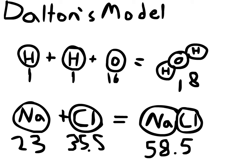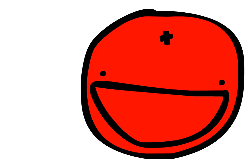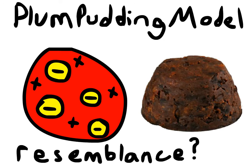Dalton created the billiard ball model to help demonstrate how compounds work. J.J. Thompson's Theory, 1904. Thompson discovered a subatomic particle called an electron. Originally he called the negatively charged particles corpuscles, later to be named the electron. He thought that there were positively charged particles too, since there were negative ones. He created the Plum Pudding Model: a positively charged ball containing electrons inside of it.